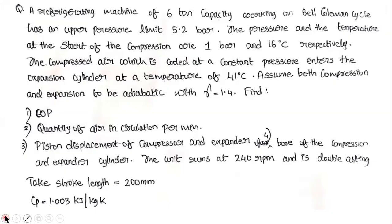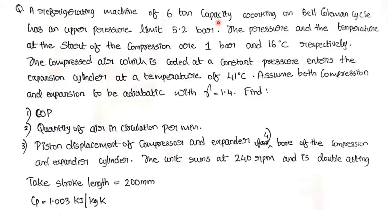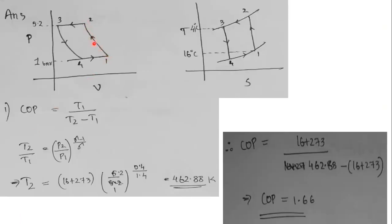The pressure and temperature at the start of compression are given as 1 bar and 16°C respectively. Since 1→2 is the compression process, the start of compression is point 1. Therefore P1 (and P4) equals 1 bar.